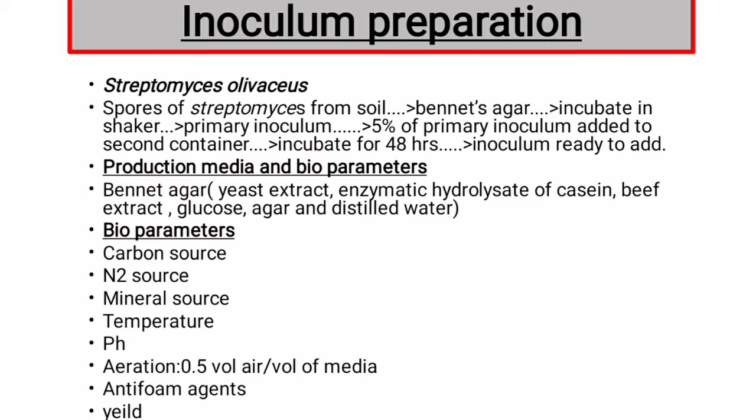Vitamin B12 production requires cobalt as a mineral source. It is necessary to add cobalt for the maximum yield of cobalamin. It is also essential to add cyanide to the medium for the conversion of cobalamin to cyanocobalamin, or vitamin B12.